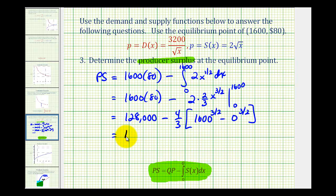So we'll have 128,000, minus 4/3 times 1600 to the 3/2 is 64,000.